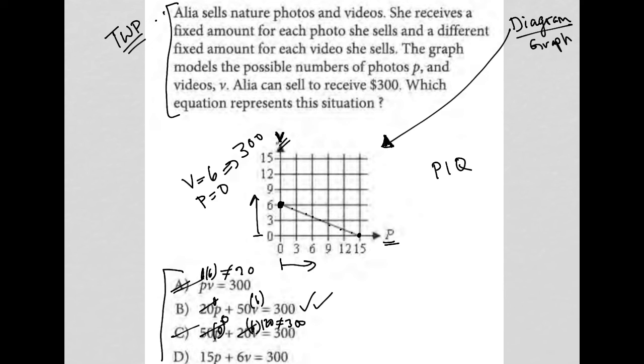And then choice D, 15 times 0 is 0. 6 times V, 6 times 6 is 36. And again, 36 does not equal 300 as well. So D is gone. And therefore, choice B is the best answer here.